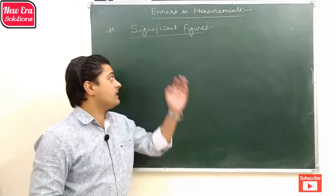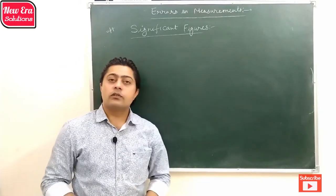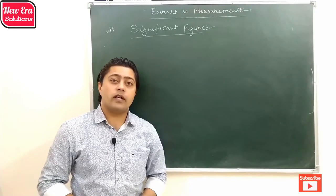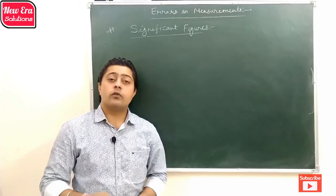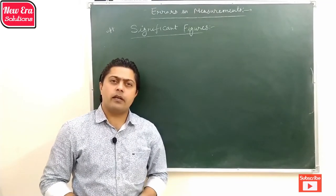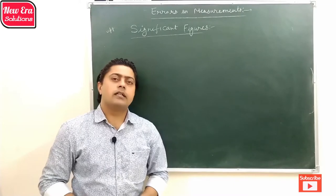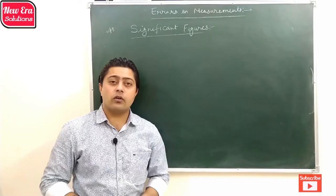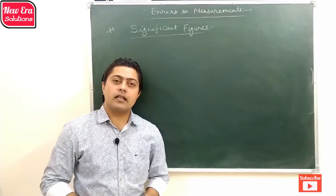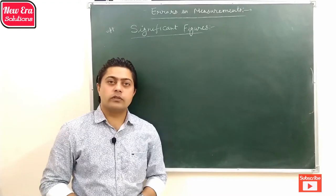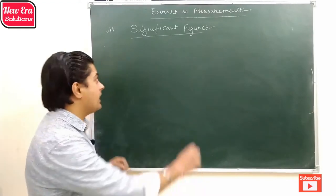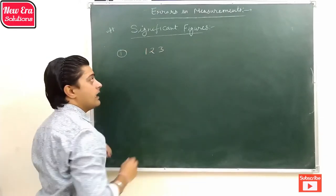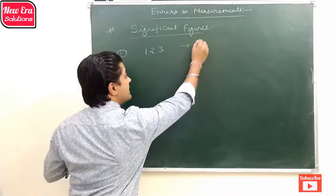In measurement, the first topic is significant figures. Significant figures are those digits which are reliable in the measurement of any physical quantity. When we measure any physical quantity during an experiment or in some calculation, the digits which are reliable for its measurement are called significant digits. Significant digits are identified on the basis of certain rules. The first rule is that all the non-zero numbers in the expression of measurement are considered as significant. So in this measurement, there are three significant digits.